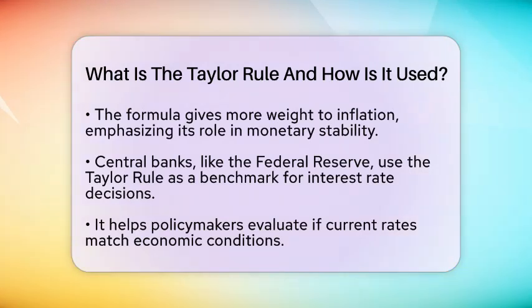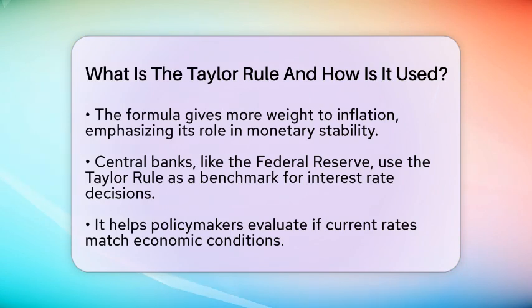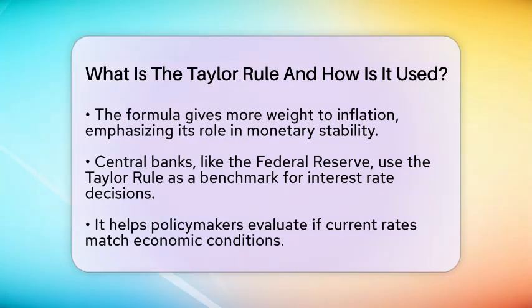For example, if inflation hits 3% — which is above the 2% target — and gross domestic product grows faster than potential, the rule would suggest a rate hike to cool the economy.